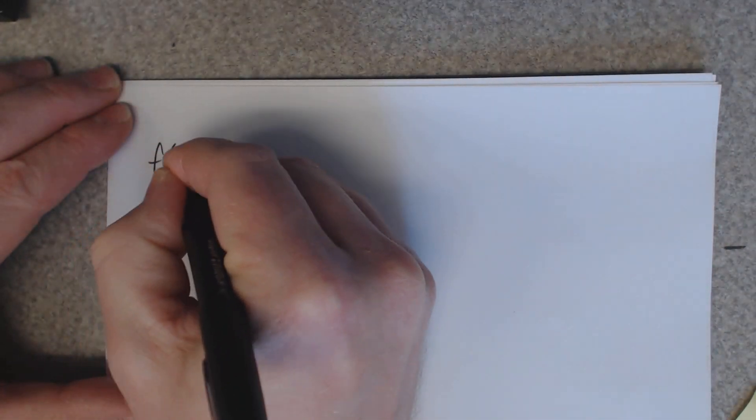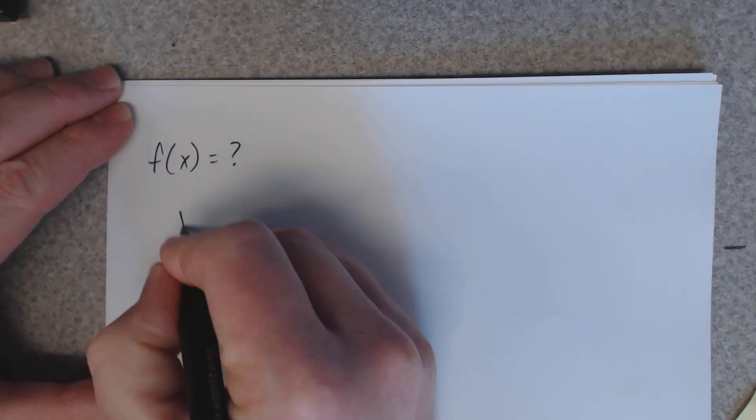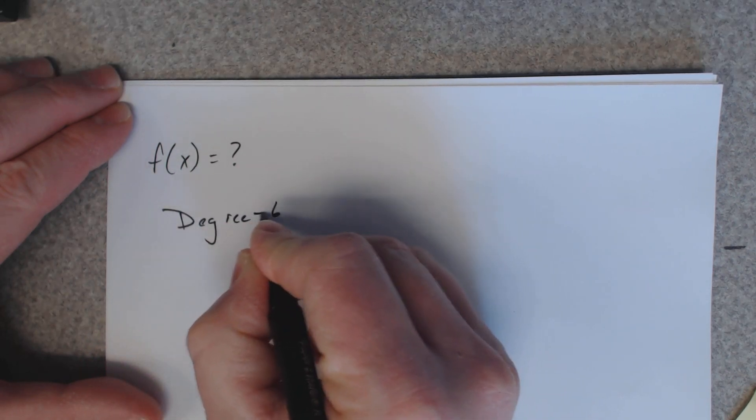So here we have a question that says find a polynomial function with degree 6. So we're supposed to find a function and the degree is 6.